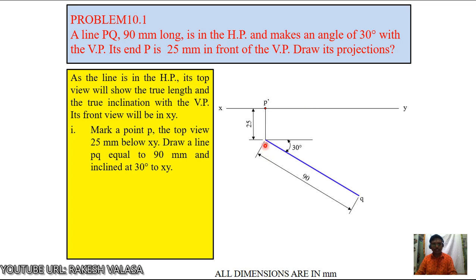Now give the dimension. This PQ is 90mm. Draw the vertical projector to XY, up to XY. That name is Q dash. Here P dash Q dash is the final front view. That means that is the reduced length.